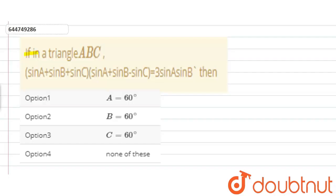The question is: If in a triangle ABC, (sin A + sin B + sin C)(sin A + sin B - sin C) is equal to 3 sin A sin B, then we know that sine rule is A upon sin A is equal to B upon sin B is equal to C upon sin C is equal to 2R.